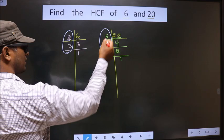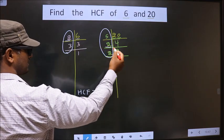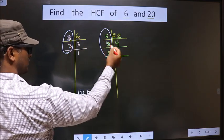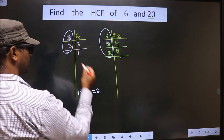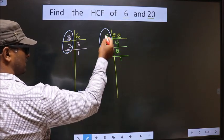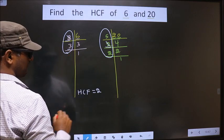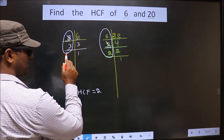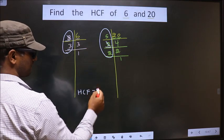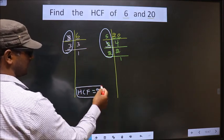Starting with number 2. Do we have 2 here? Yes. So, cut the 2 and write here. Now, next number is 3. Do we have 3 here? No. So, no more numbers. We got only one number common in these 2 places. So, this is our HCF.